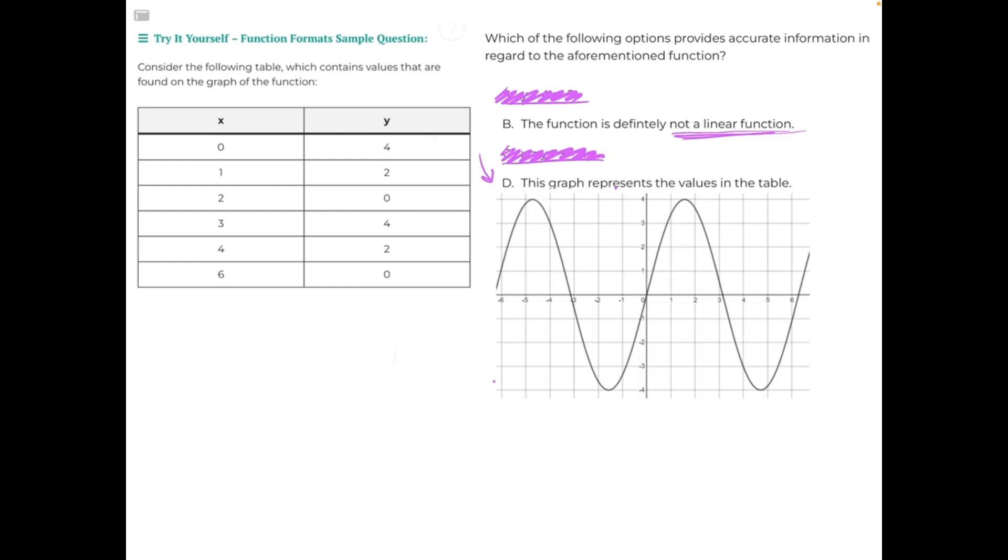The way to know for sure if d is the correct answer is by taking one of these points in the table, or maybe more than one if some points match but others don't, and plotting them on this graph here to see if it lines up. So again, let's take that first point, 0, 4, over 0, up 4. We can already see that that point is not anywhere on the graph, so d is incorrect, making b our correct answer.